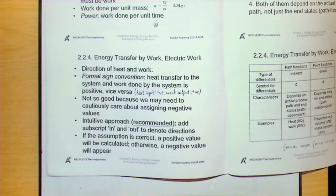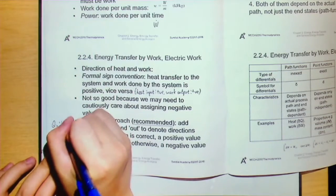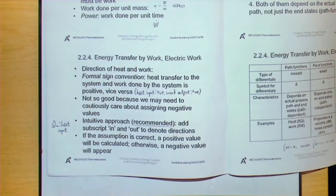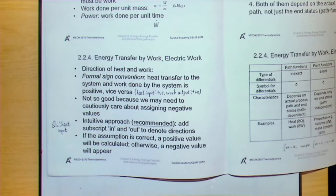So it is recommended to use the intuitive approach. That means we add subscripts 'in' and 'out' to denote directions. Once you have added 'in' or 'out,' you have assumed a direction. For example, Q_in means heat input and W_in means work input. If the assumption is correct, a positive value is returned; if not, a negative value means the correct direction is the reverse. I find this approach more acceptable because it matches our intuition.